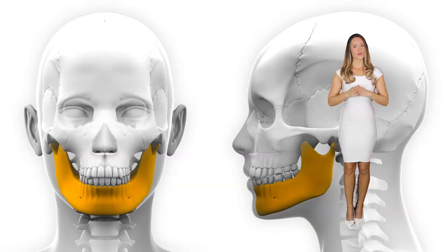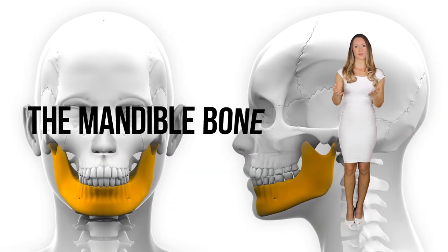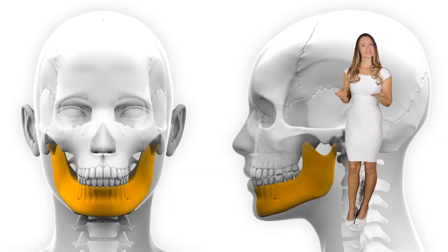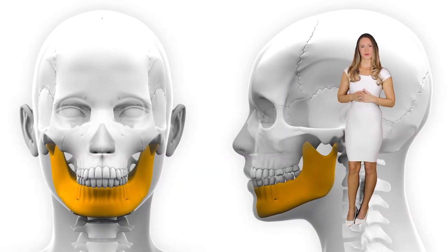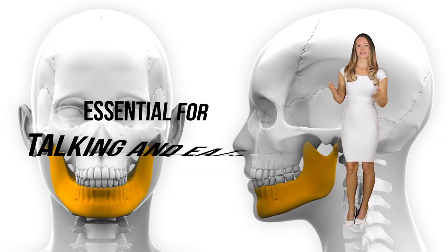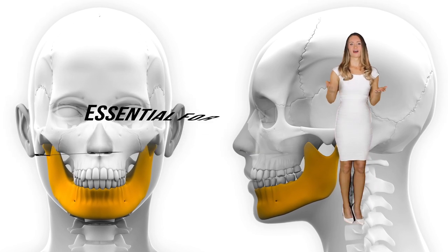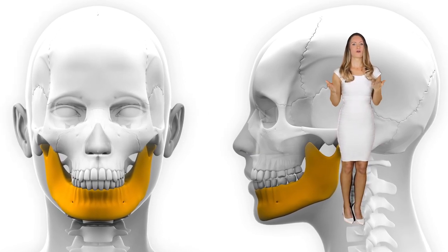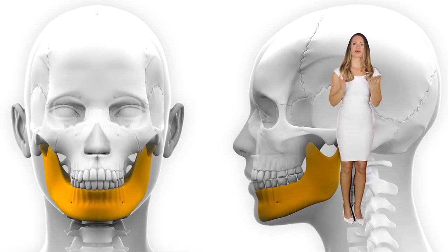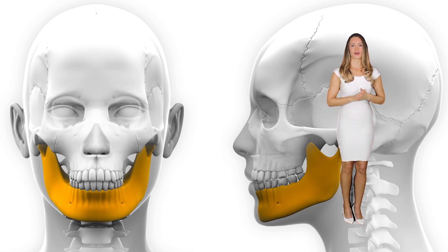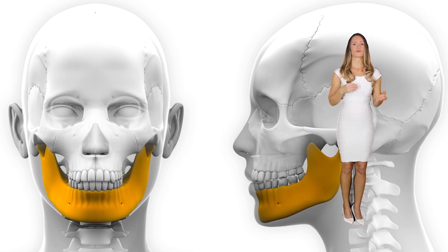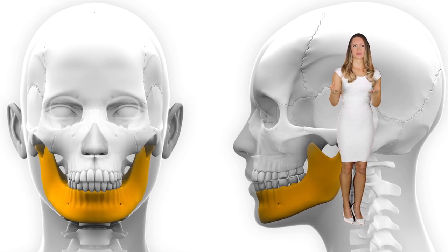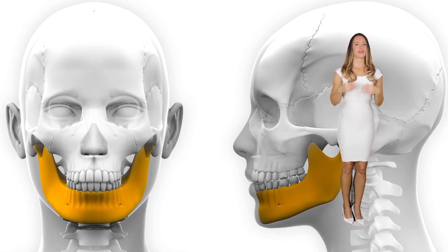The mandible bone is associated with the maxilla bone and is essential for talking and eating. It houses the lower teeth, and it's the only flexible and mobile bone of the skull, through the temporomandibular joint.